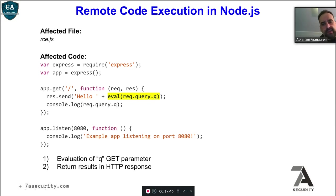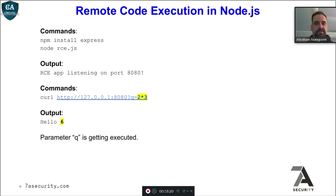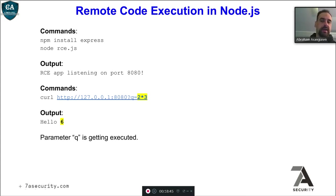If we have code execution in a Node.js application, what can we really do with it? We have evaluation of the 'q' GET parameter — request.query.q — and this result is returned in the HTTP response via res.send. Using curl, we can try to multiply 2 by 3 and get 6, which means we have execution on the server side. We can also load different Node.js modules, for example require the 'util' module and format a string. We can use php -r to echo the URL-encoded payload, making it easier to work with.